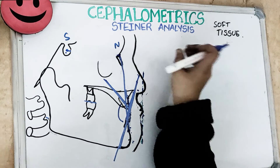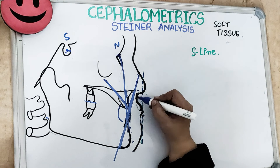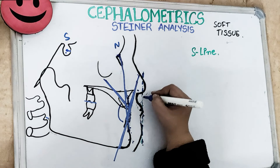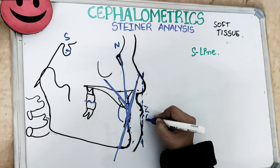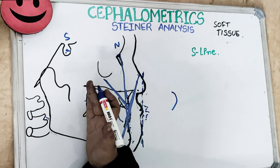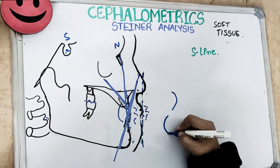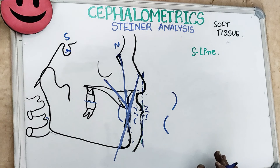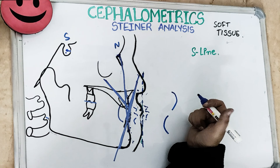The third parameter is the soft tissue analysis. According to Steiner, the S-line is drawn from the lower border of the nose to the tip of the chin, passing through the lips. This tells the patient's profile. If the lips are beyond this line, they are protrusive and the patient has a convex profile. If the lips are behind this line, they are retrusive and the patient has a concave profile. That finishes Steiner's analysis. Leave questions in the comments, give a thumbs up, and subscribe to the channel.